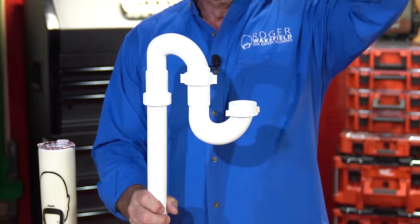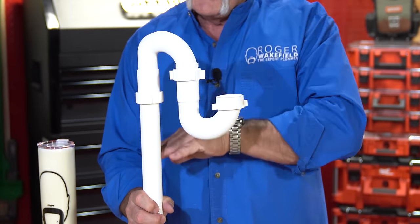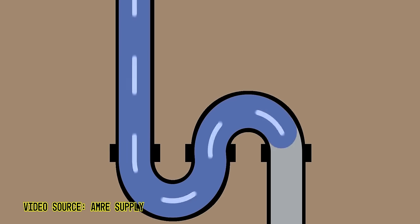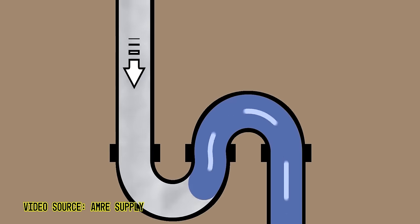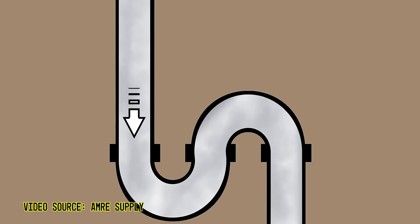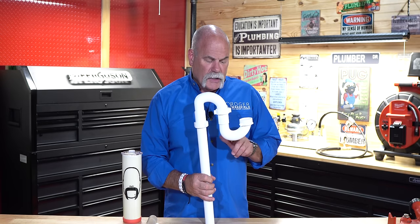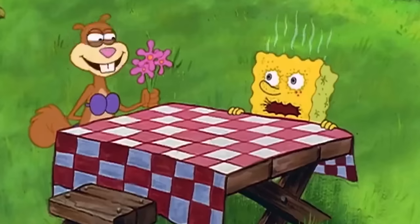And what happens is — supposedly the theory behind it — the water will come down, it will drain out here, and then from here to here, it will hold water in it. And that will keep the sewer gases from coming back up. Well, the problem is the S actually creates a siphon, and what it does is it pulls that water down. The J-bend on the bottom actually sucks down lower than it should and can dry out.